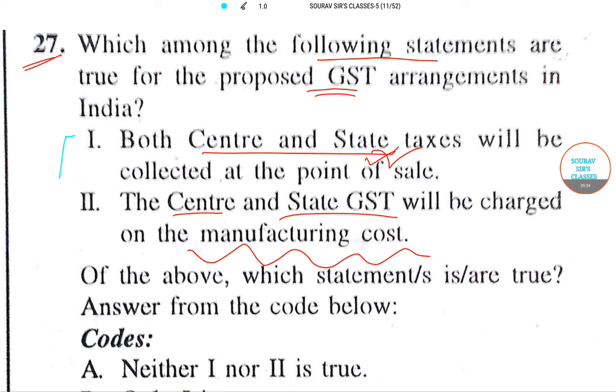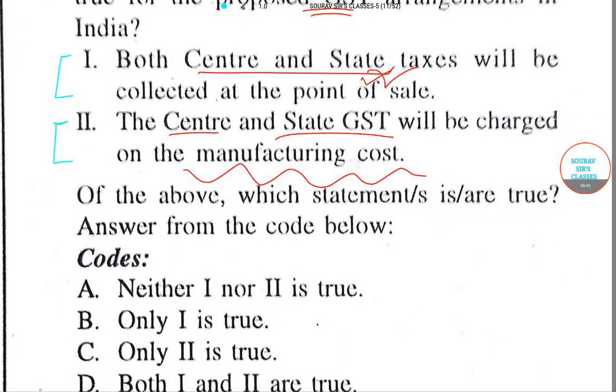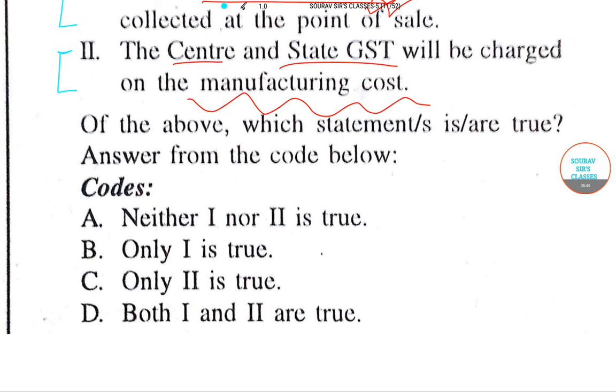Now moving on to the options, our analysis shows both center and state taxes will be collected at the point of sale as well as charged on the manufacturing cost. So both one and two are correct. So the correct answer to this particular question is option number D.